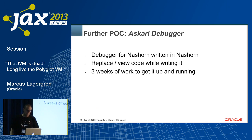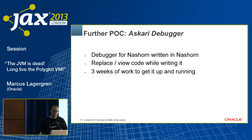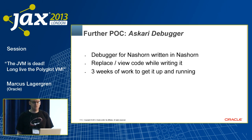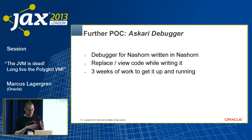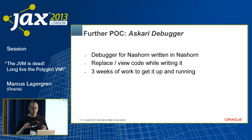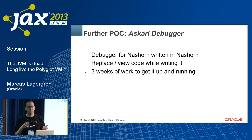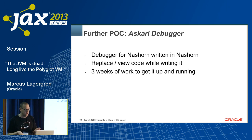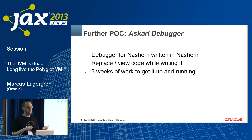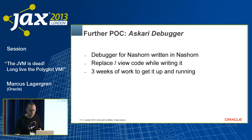The proof of concept that Jim Laskey on my team did is the Ascari debugger — a meta debugger for Nashorn written in Nashorn. You can replace and view code while writing it, like a simple Swing app. It took him three weeks to get it up and running, and he did a really impressive demo at JavaOne. It's an incredibly powerful little debugger where you can evaluate JavaScript statements and replace functions, and it just works. Ascari is one of those little birds that pick bugs from rhinoceri — so that's the name.